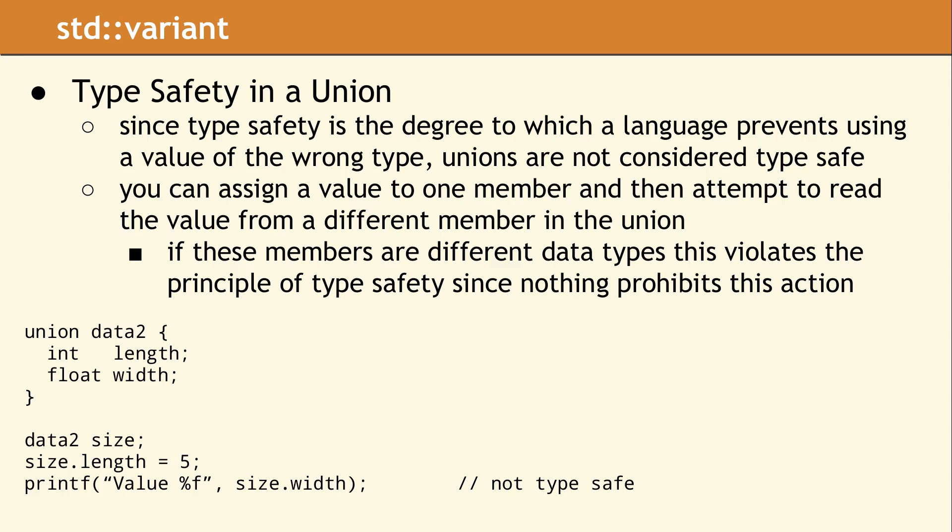In this union example, we are writing to a data member of type int and then reading from a data member of type float. This might seem like a typical int-to-float promotion, which is a well-defined operation in C++. However, with respect to members of a union, the float access here is treated more like a reinterpret_cast rather than a promotion. Depending upon the specifics of your compiler and platform, this code may crash at runtime or silently produce some random floating point value. The real fear is when the type mismatch occurs in code far away from the union declaration, or when it may not be obvious the data came from a union.